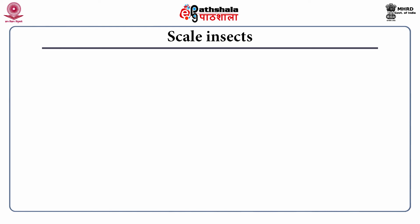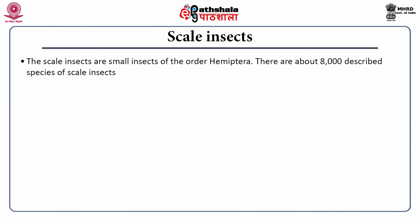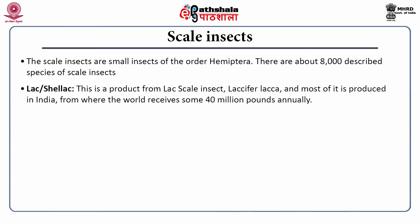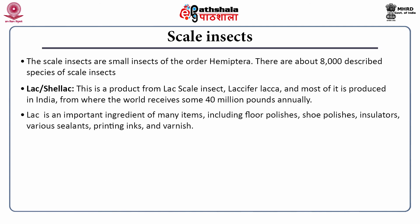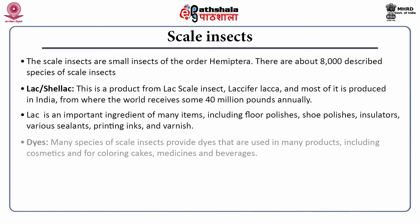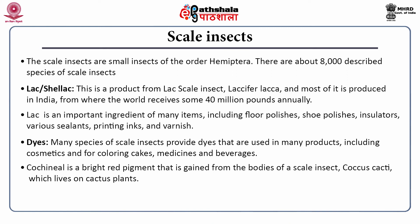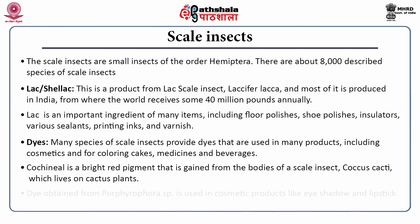Scale insects are small insects of the order Hemiptera; there are about 8,000 described species. They produce a substance called lac or shellac, obtained from the scale insect Laccifer lacca. Most of it is produced in India, from where the world receives some 40 million pounds annually. Lac is an important ingredient of floor polishes, shoe polishes, insulators, sealants, printing inks and varnish. Scale insects are also used as a source of dyes used in cosmetics and for coloring cakes, medicines and beverages. Cochineal is a bright red pigment obtained from the bodies of Coccus cacti, which lives on cactus plants. Dyes from Porphyrophora species are used in cosmetic products like eye shadow and lipsticks.